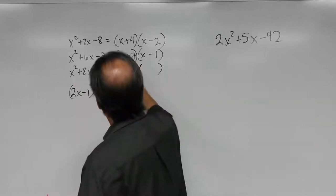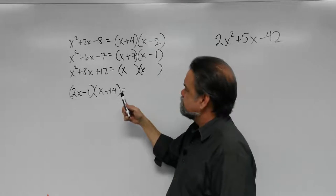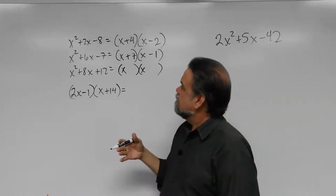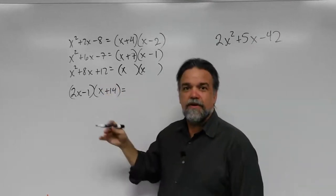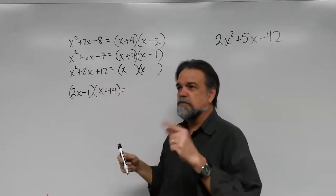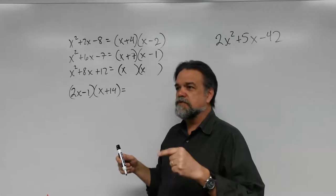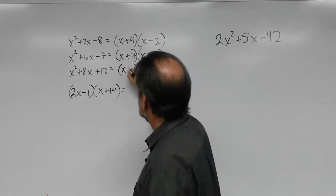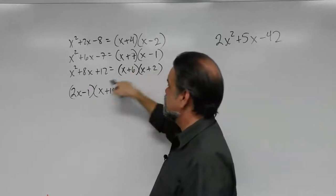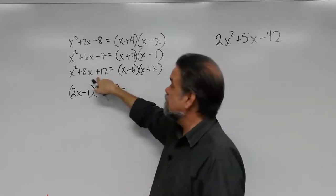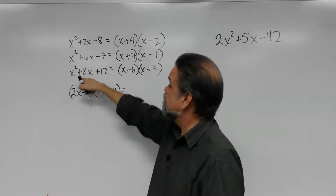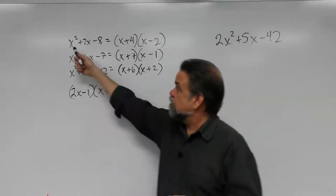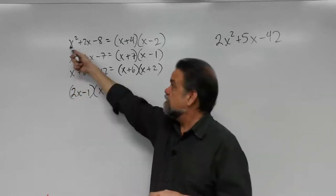Again, x and x. This time my product is 12 and my sum is 8. Factors of 12: 12 times 1, 6 times 2, 4 times 3. Which pair adds up to 8? That would be 6 and 2: (x + 6)(x + 2). They're both positive because a positive product means the signs are the same, and a positive sum means they both have to be plus. This is how you factor trinomials with a leading coefficient of 1.